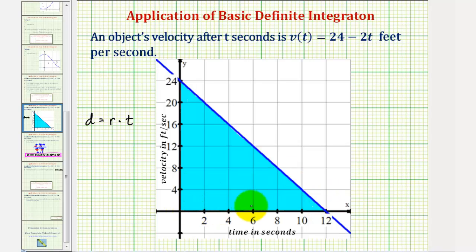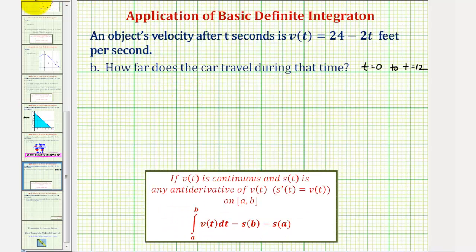Now looking at the graph, we could find this area by using the area formula of a triangle. But let's find this area using a definite integral, where the distance traveled would be equal to the integral of the velocity function from 0 to 12 seconds. Using the fundamental theorem of calculus, we'll now find the antiderivative function of 24 - 2t, meaning we want to find a function that has a derivative of 24 - 2t, which would be 24t - t².